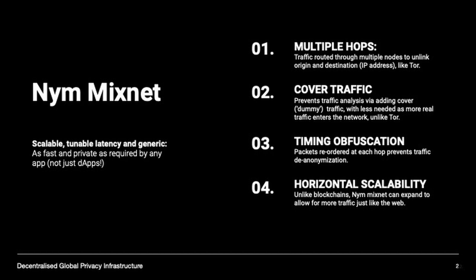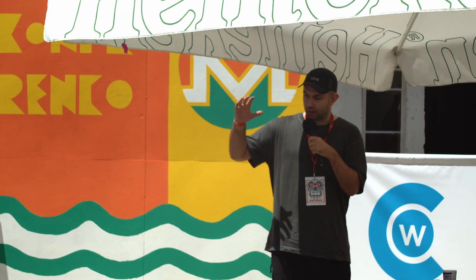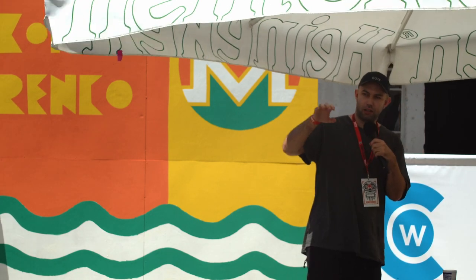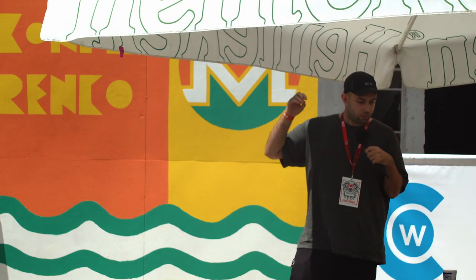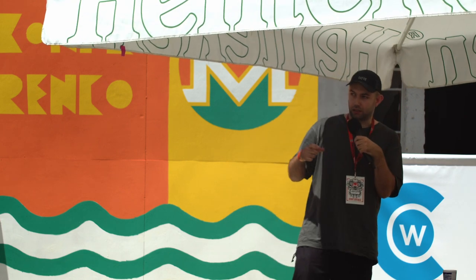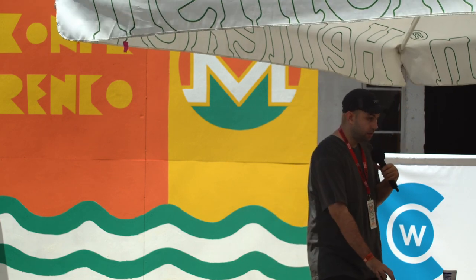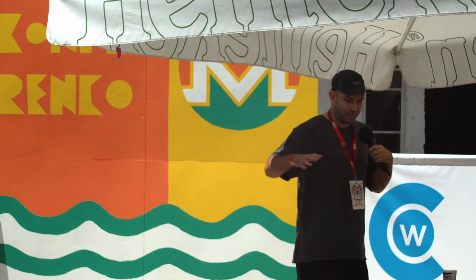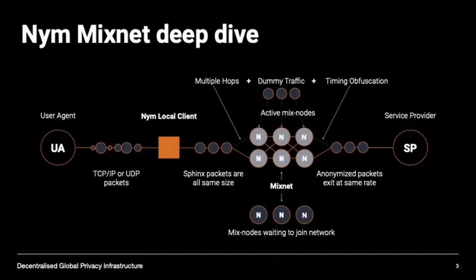Furthermore, timing obfuscation is added: before each hop — similar to onion routing with multiply encrypted packets — a mix node unwraps one layer of encryption and passes it on, but with a small variable timing delay added to each hop. Combined with the cover traffic, this makes it significantly harder to follow traffic through the system.